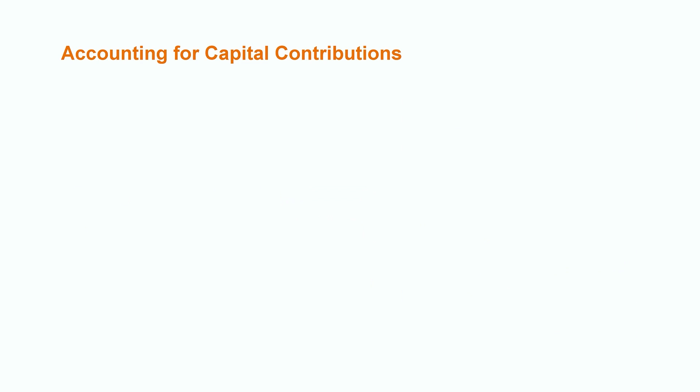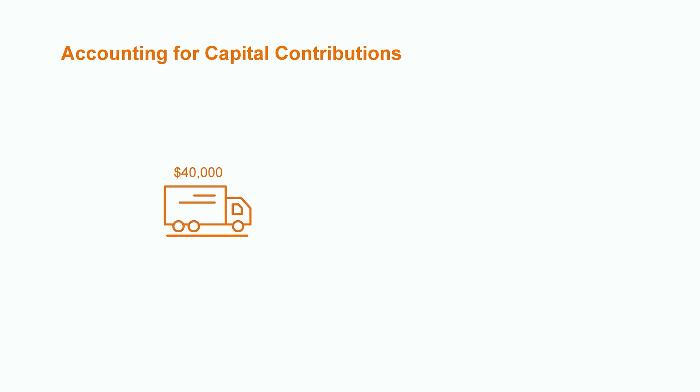But what if the company receives a capital contribution in the form of non-cash assets? Let's say they receive a delivery truck with a fair market value of $40,000. The accounting transaction would look a little bit different since the company is not receiving cash. In this case, the company would increase the value of its equipment account with a debit of $40,000. The corresponding entry would be an increase to their equity with a credit of $40,000 to the common stock account. Regardless of whether the company receives cash or non-cash assets, ultimately more equity is being infused into the company and would be reflected directly within the balance sheet.